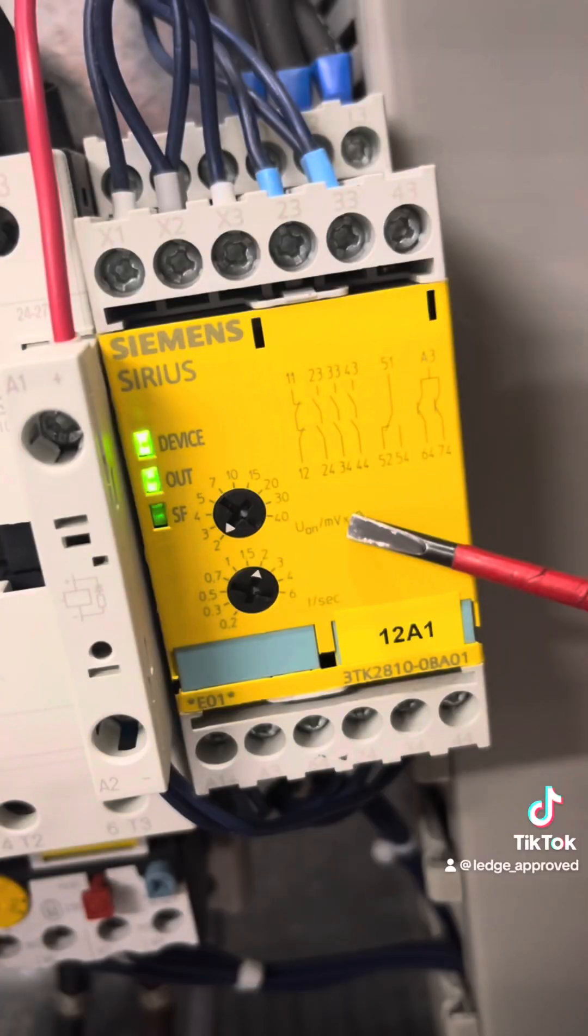So a quick overview of the front: we've got our device showing your supply voltage, output green for safe, orange for run, and then you've got your system fault indicator if you've got an error on the system.